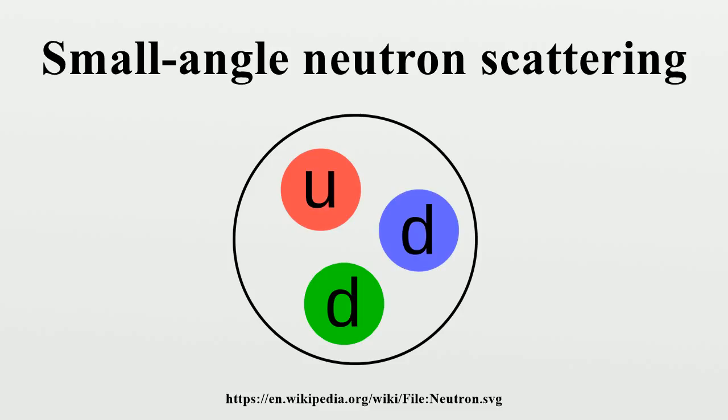This means that neutrons deflected from hydrogen are 180 degrees out of phase relative to those deflected by the other elements. These features are important for the technique of contrast variation.